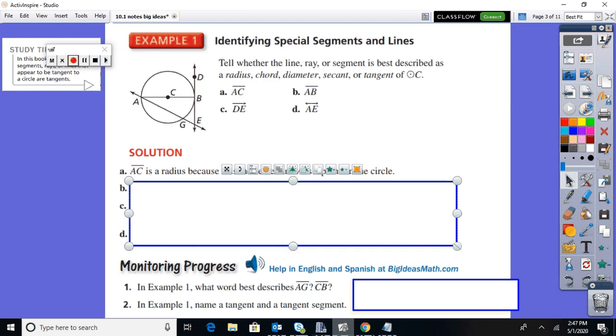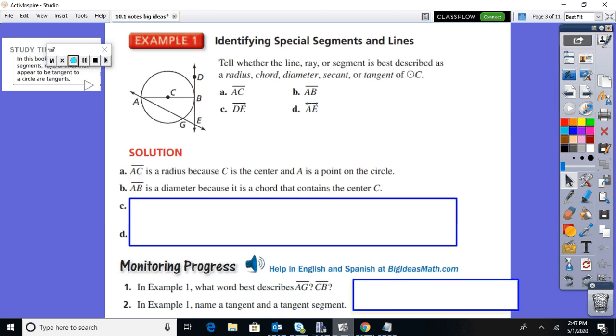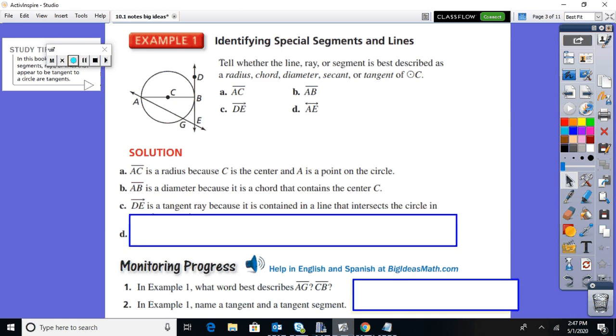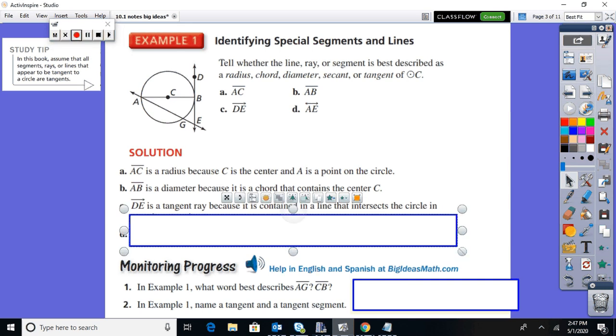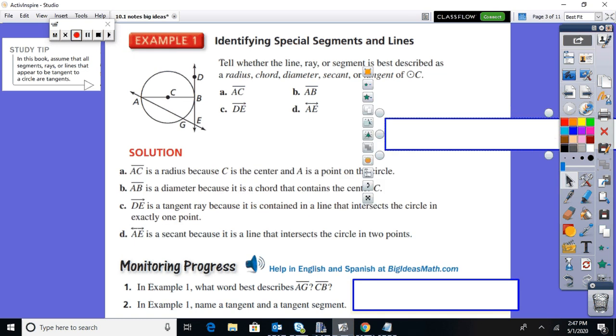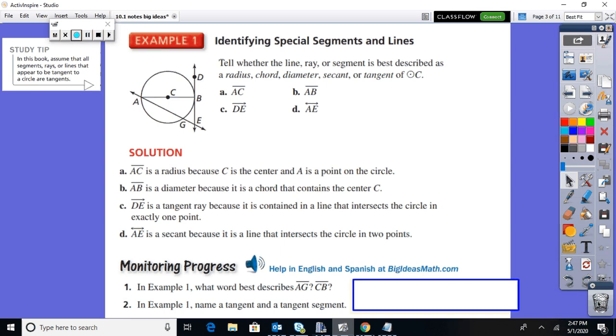How about part B? AB. Well, you're going all the way through, so AB is a diameter. How about DE? Well, since you are just grazing the circle, hitting it once, DE is a tangent. And a little note we have here: in this book, assume that all segments, rays, or lines that appear to be tangents are tangents. And then part D, you've got AE. And of course AE is a secant because it hits the circle not once but twice. If I were to stop at G, then it would have been a chord, but I kept it going, so it is a secant.